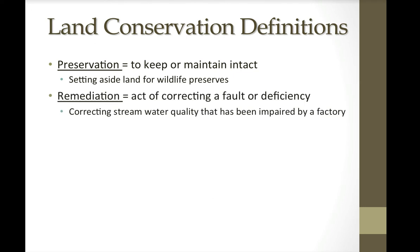Remediation is the act of correcting a fault or deficiency — taking land that is degraded in some way and fixing it. For example, a stream with poor water quality due to a nearby factory could be remediated by establishing wetlands, cleaning up the factory, or ensuring it no longer discharges into the stream.